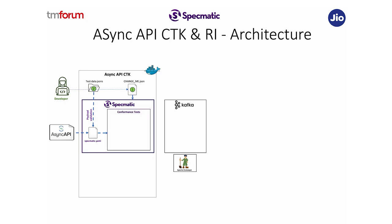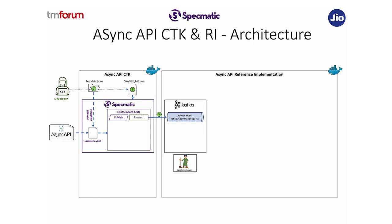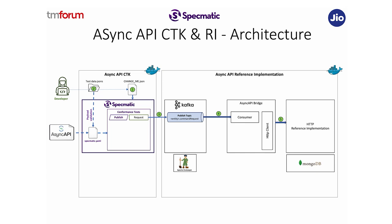If everything looks good, the conformance test gets kicked off. The conformance test publishes a command onto the command request topic, which gets picked up by the consumer. In our reference implementation, we provide all of this including the Kafka broker inside a Docker image. We also have an Async API bridge, which picks up the message from the published topic. The consumer picks this up and makes an HTTP call to the standard HTTP reference implementation that TMforum already provides. Once the response comes back, the producer on the Async API bridge puts the message on the command reply topic, which is then verified by Specmatic.